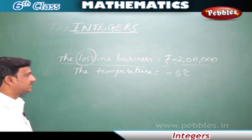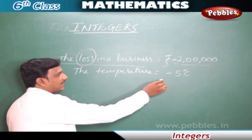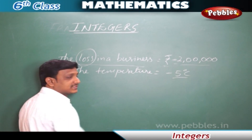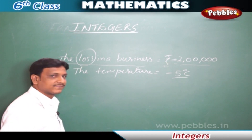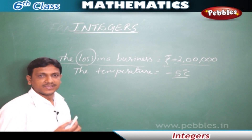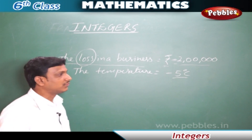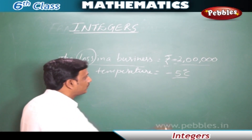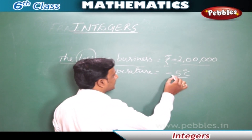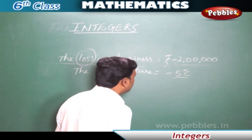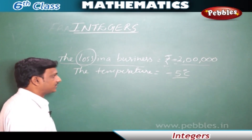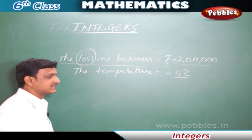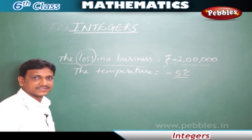In the same way, the temperature is minus 5 degrees. When we write minus 5 degrees, it means it is very cold — below 0, less than 0. So, we use the minus sign to indicate that low temperature: minus 5 degrees Celsius.